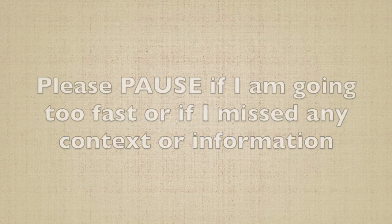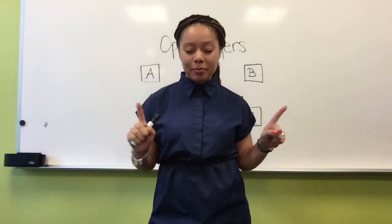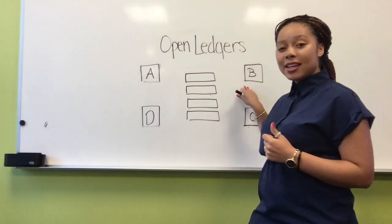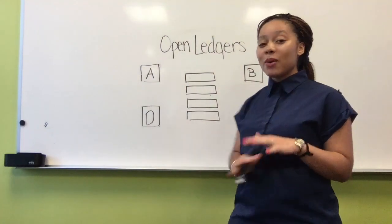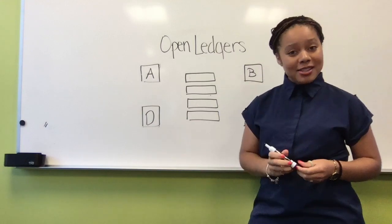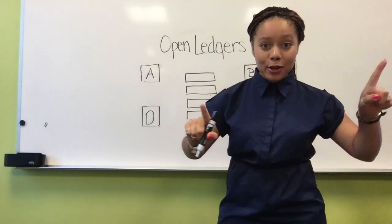Now I'm going to illustrate to you what an open ledger looks like. Please feel free to pause if I'm going too fast or if I'm missing information. This is in no way implementation, this is all conceptual. So in this example we have party A, B, C, and D and they want to move money amongst each other.